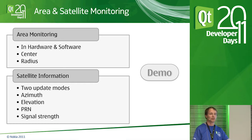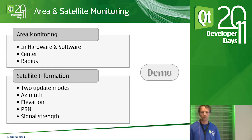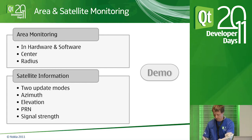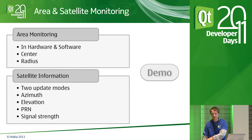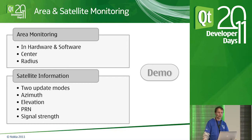Regarding error monitoring and satellite information — a question from the audience: are we able to determine how accurate the retrieved position is? Yes, we can. That is found both in the satellite information and in the position info object when you retrieve a coordinate — there's also accuracy information in there.